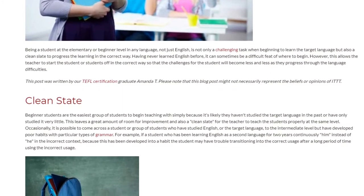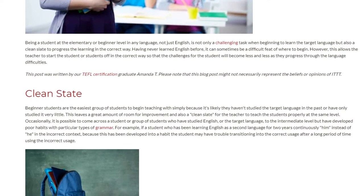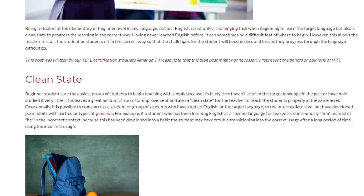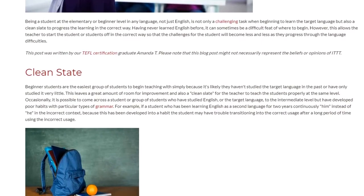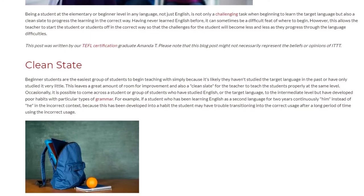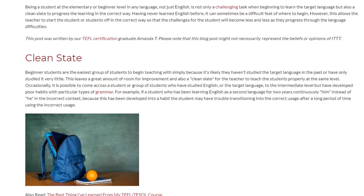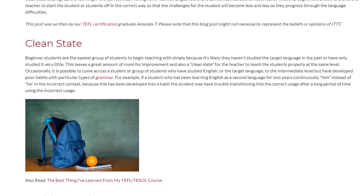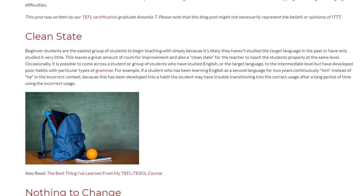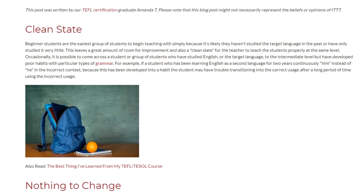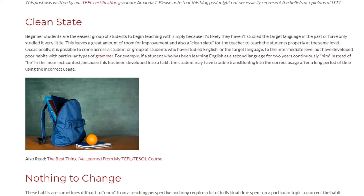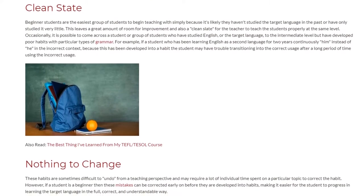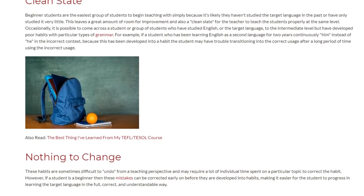Occasionally, it is possible to come across a student or group of students who have studied English or the target language to the intermediate level but have developed poor habits with particular types of grammar. For example, if a student who has been learning English as a second language for two years continuously uses 'him' instead of 'he' in the incorrect context, because this has been developed into a habit, the student may have trouble transitioning into the correct usage after a long period of time using the incorrect usage. These habits are sometimes difficult to undo from a teaching perspective and may require a lot of individual time spent on a particular topic to correct the habit.